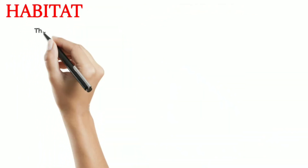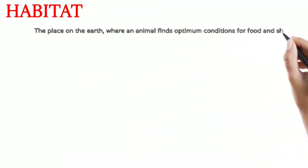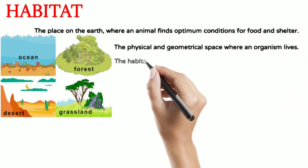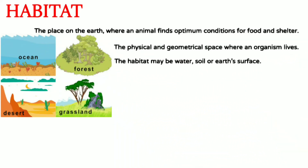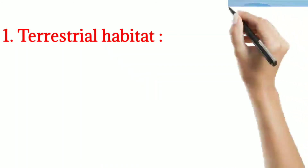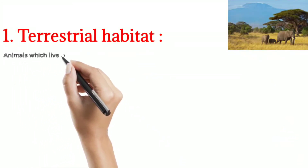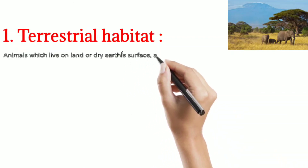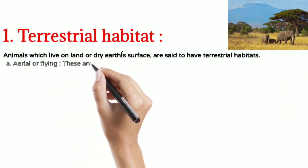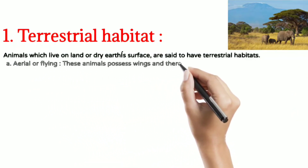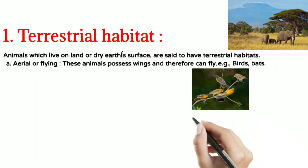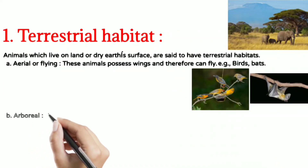Now, Habitat is the place on earth where an animal finds optimum conditions for food and shelter. It could be a physical or geographical environment where organisms are found. First, terrestrial habitat — animals which live on land or on the dry surface have a terrestrial habitat. It could also be aerial — animals like bats or birds that fly have an aerial habitat.